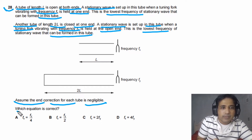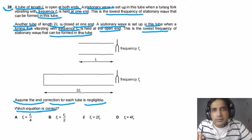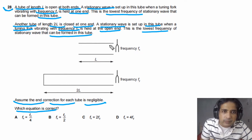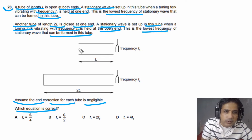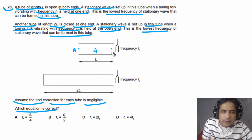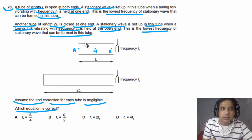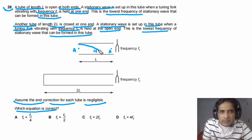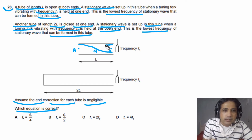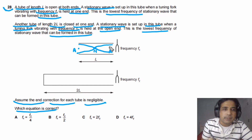We assume the end correction for each tube is negligible, and we need to find which equation is correct. First, let's draw the stationary waves inside each pipe. For the tube open at both ends, at each open end we observe an antinode, and at the center there is a node. The stationary wave inside this pipe looks like a full half-wavelength shape.